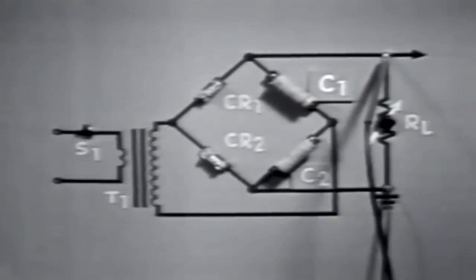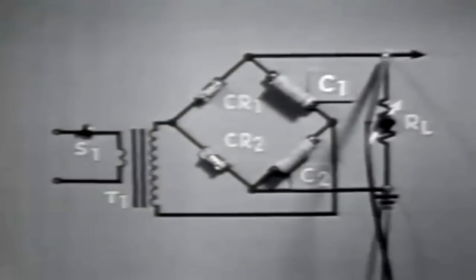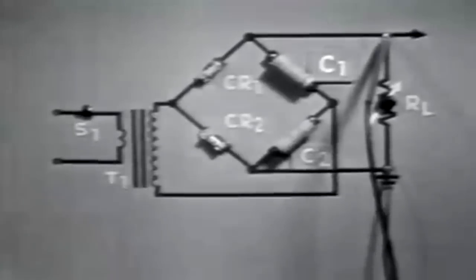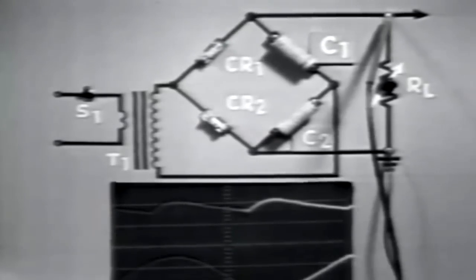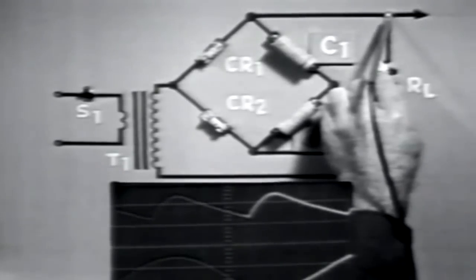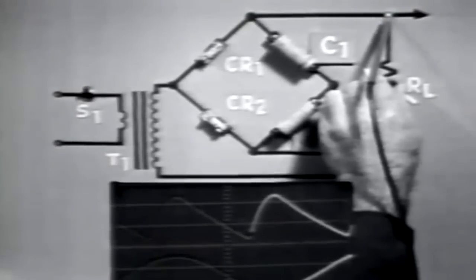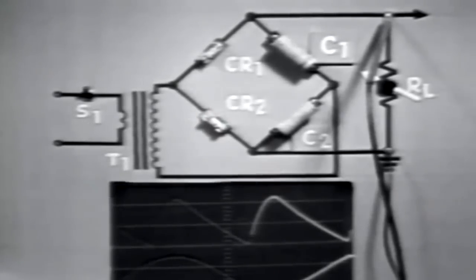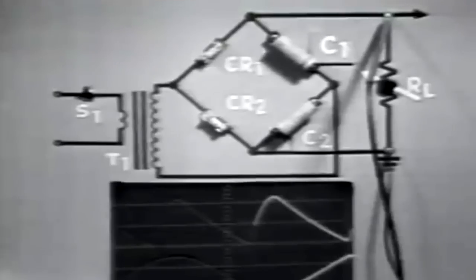Now let's determine the effects that the load has on the voltage doubler. The effect of a load change on the output voltage can be demonstrated quite effectively using this circuit. The load resistance, represented by the variable resistor, is now at maximum resistance. Therefore, output voltage is maximum for this resistance, and output current would be minimum. Decreasing the value of resistance, or increasing the load, increases the current drain, and the average output voltage decreases. Notice also that the ripple amplitude has increased. These effects occur because the load change changes the discharge time of the capacitors.